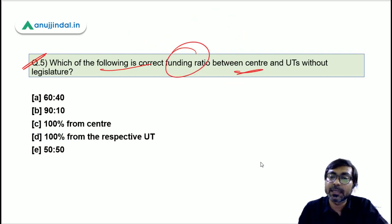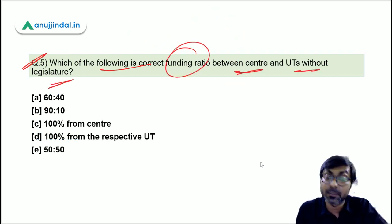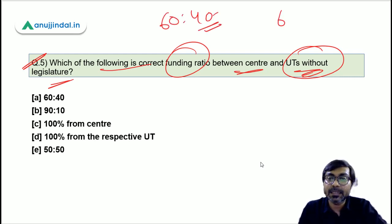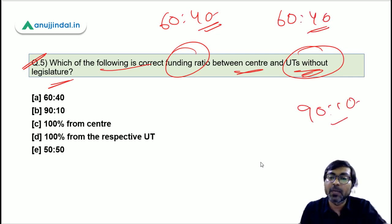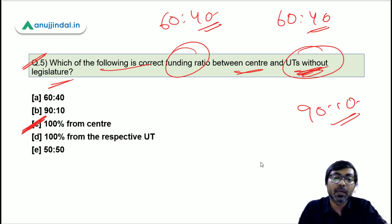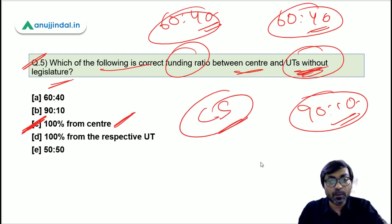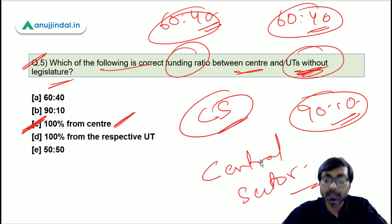Question 5: What is the correct funding ratio between the center and UTs without a legislature? For normal states it is 60:40, for Northeastern states it is 90:10, but for UTs without a legislature, 100% of the funding is provided by the central government. Also remember: this ratio structure applies specifically to Centrally Sponsored Schemes, not Central Sector schemes.